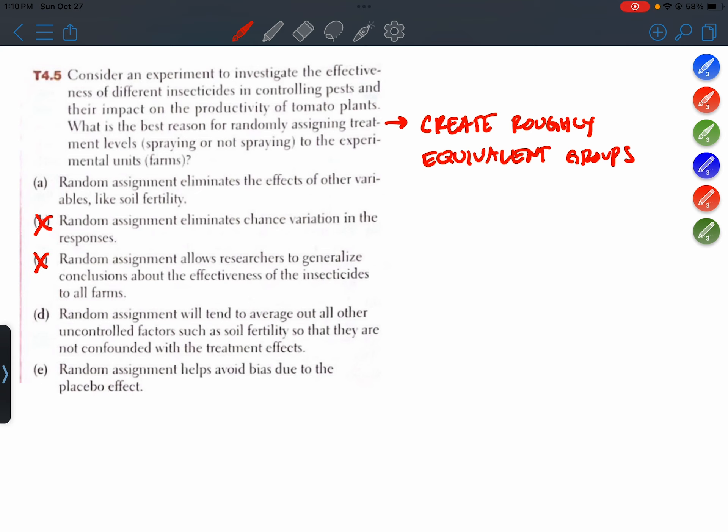D: Random assignment will tend to average out all other uncontrolled factors such as soil fertility so that they are not confounded with the treatment effects. D, I like that one. We'll save that.